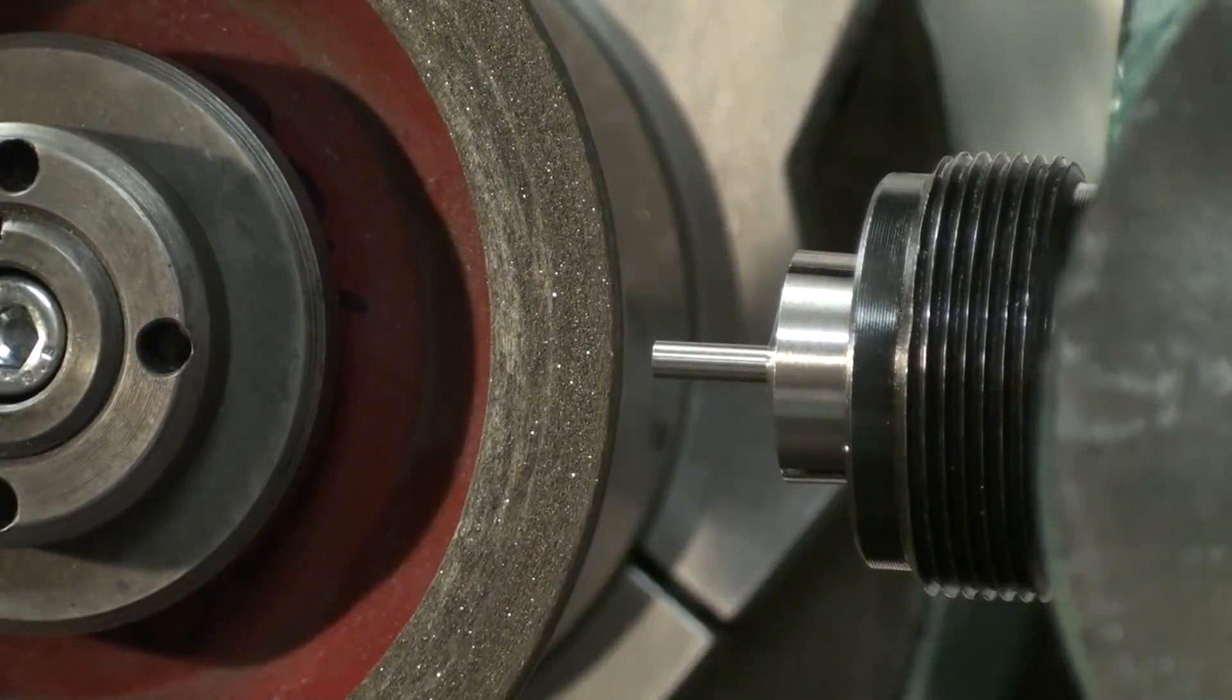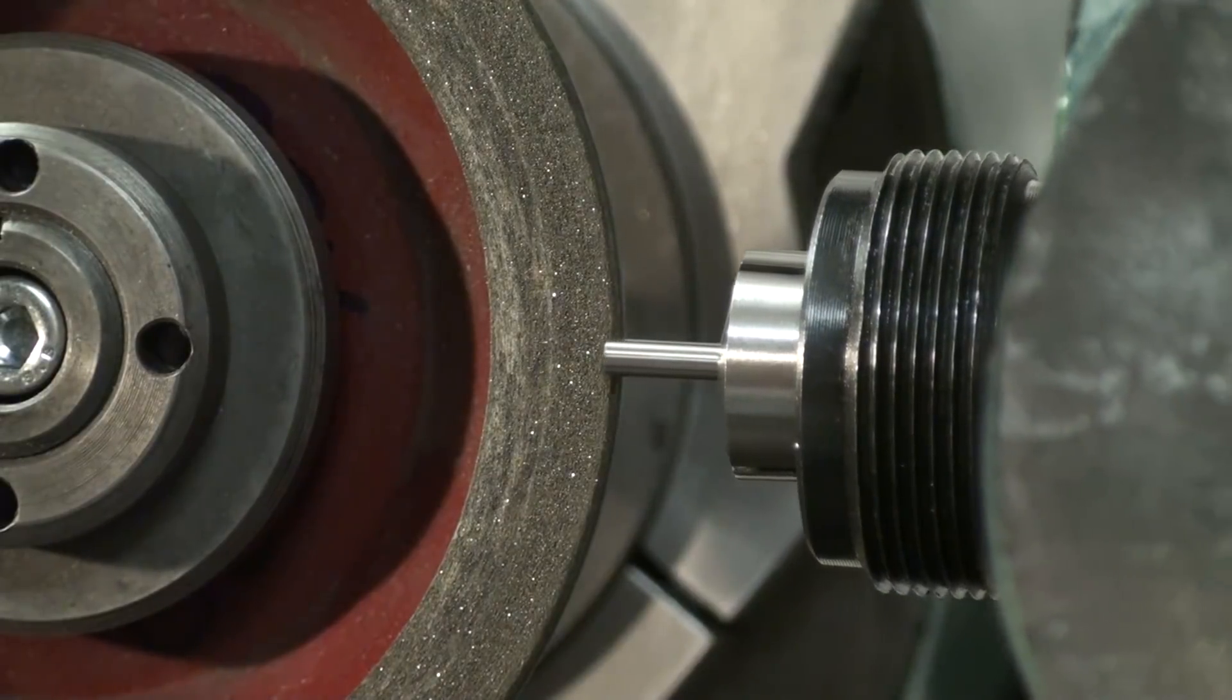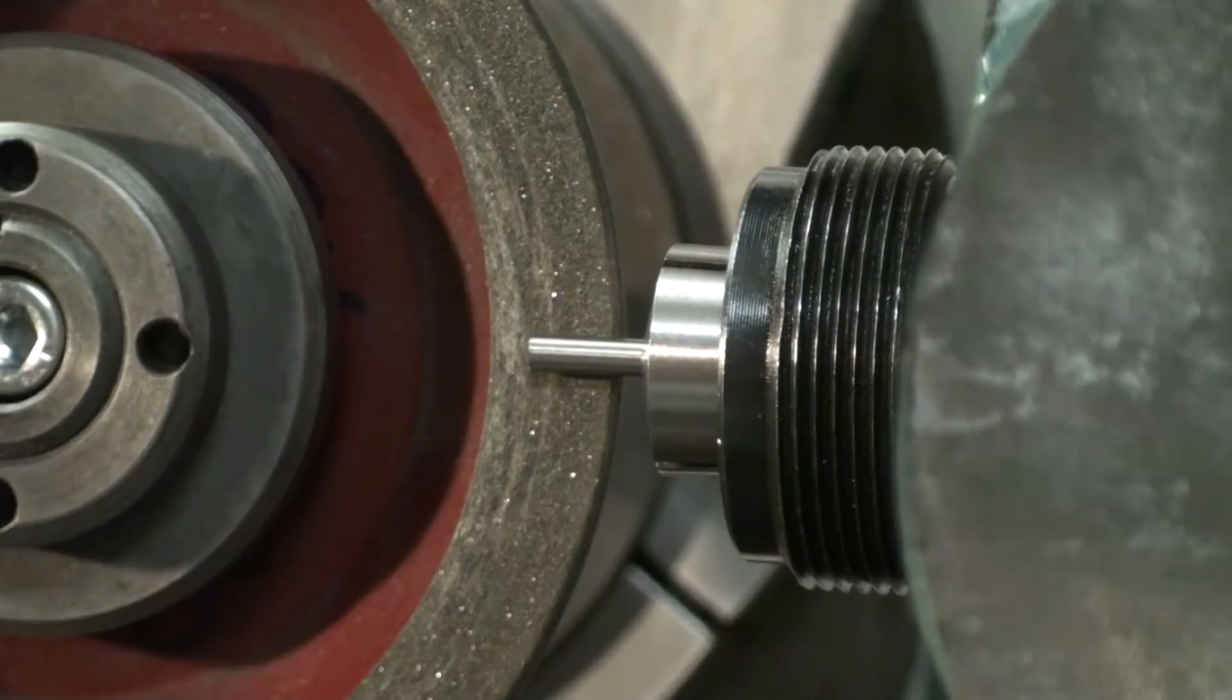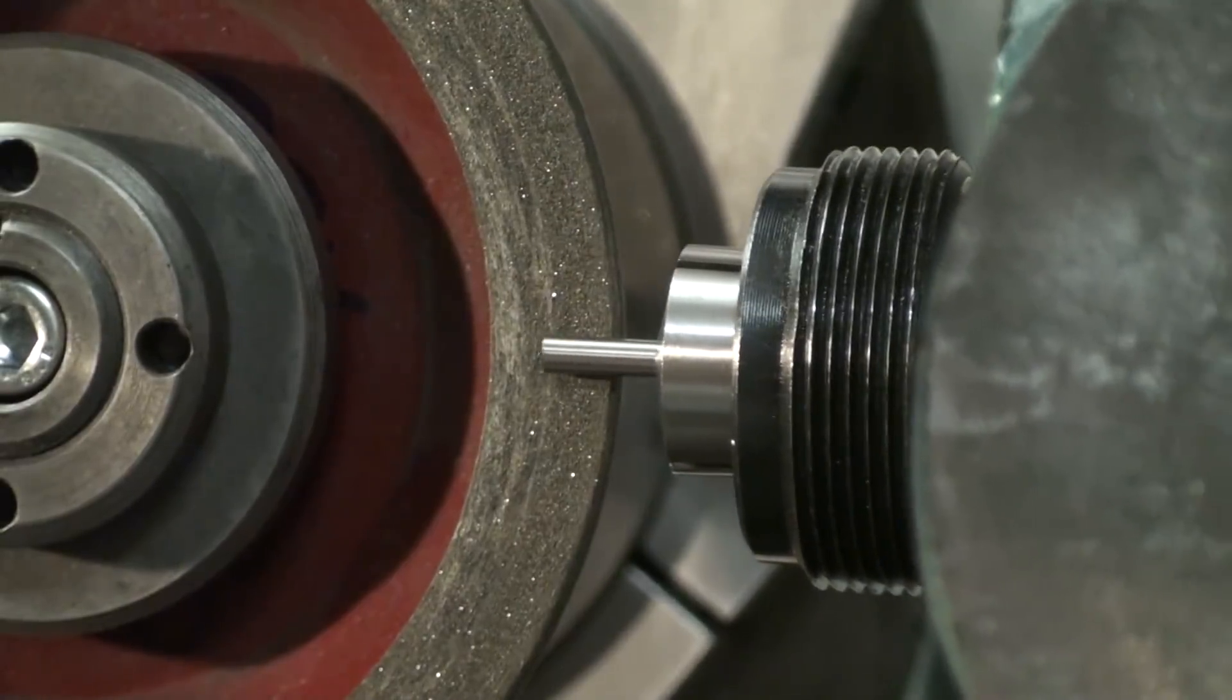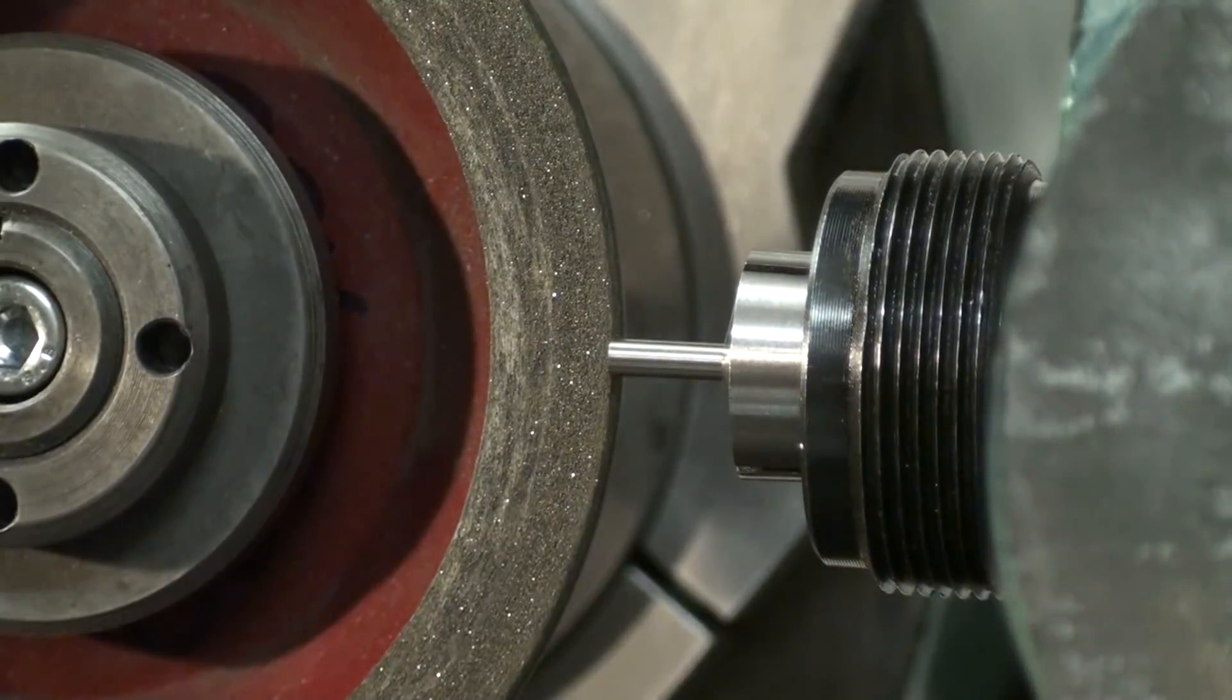I set my dial indicator on the cross slide. I set my stop for the table movement, so I'm only moving in like this. This is six and a half millimeters, a little bit more than I need.